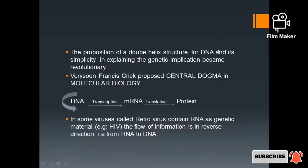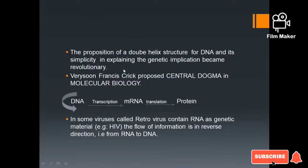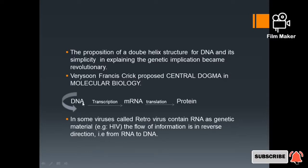The proposition of a double helix structure for DNA and its simplicity in explaining the genetic implications became revolutionary. This is the central dogma proposed by Francis Crick — the transfer of genetic information from DNA to RNA and from RNA to protein.